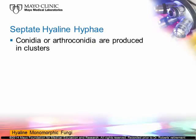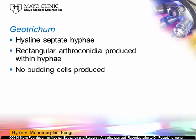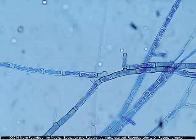One approach to identifying hyaline septate molds is to look at how they sporulate — how conidia are produced and arranged. We're going to start with the simplest mode of reproduction: the production of arthroconidia. We'll look at some fungi that produce arthroconidia, how they are produced, and how they are grouped. So we'll start with septate hyaline hyphae. If you see conidia or arthroconidia produced in clusters, we'll go that direction. The first organism is Geotrichum. You see hyaline septate hyphae and arthroconidia produced within those hyphae — rectangular arthroconidia lined up in a row.